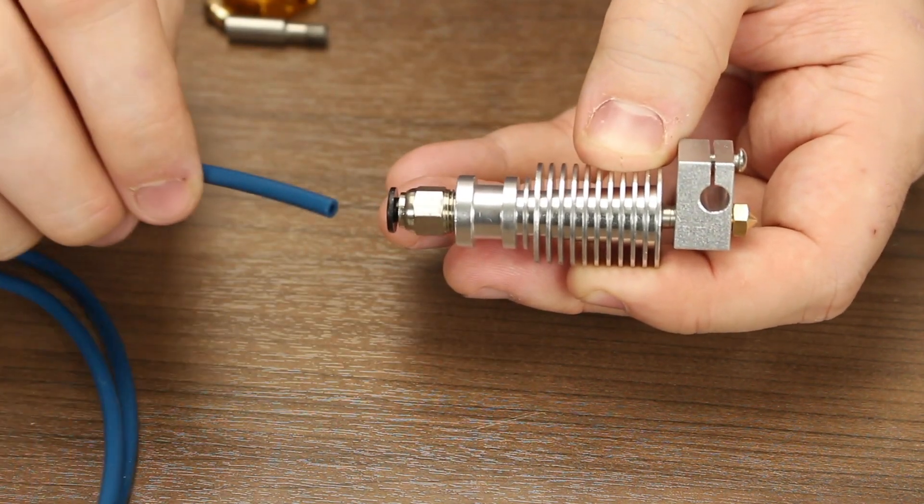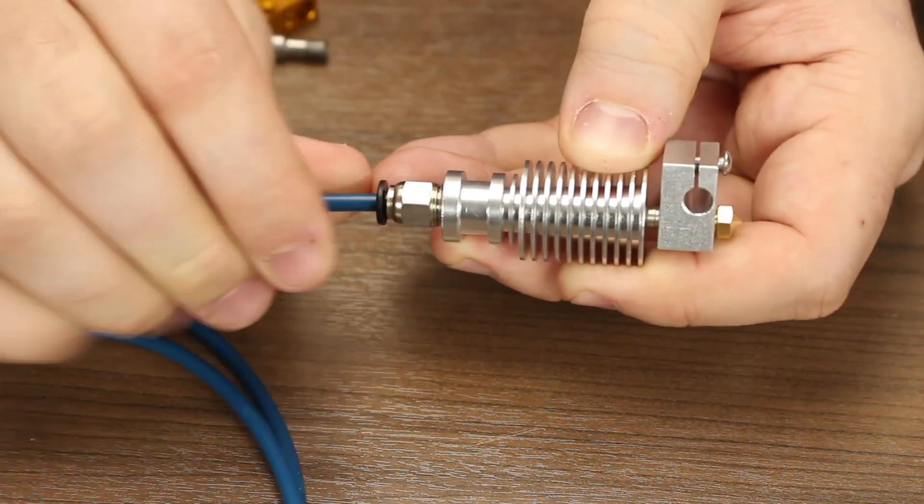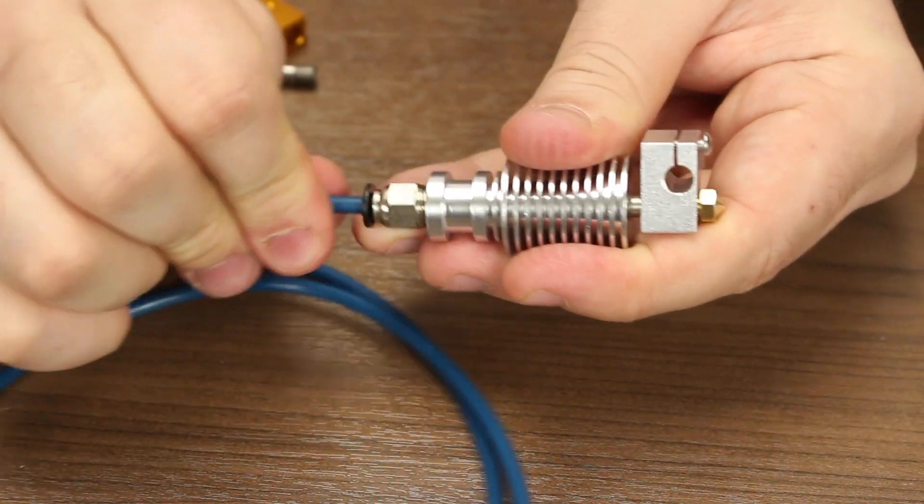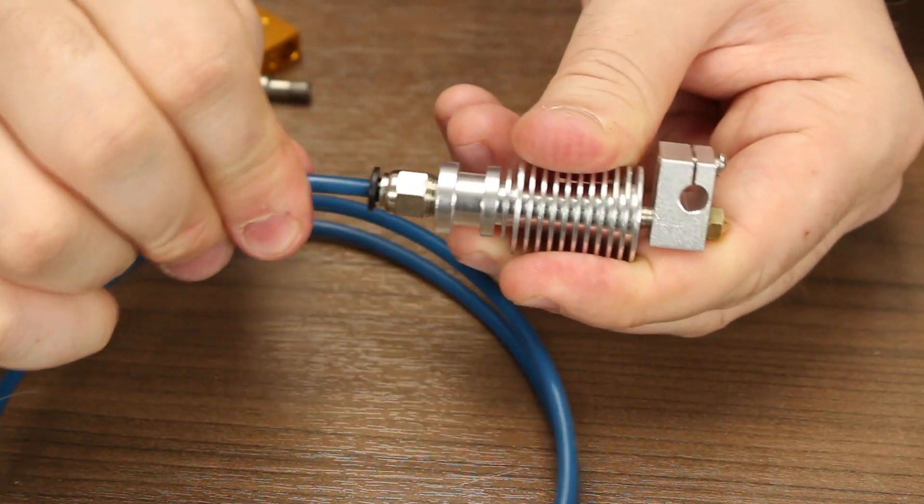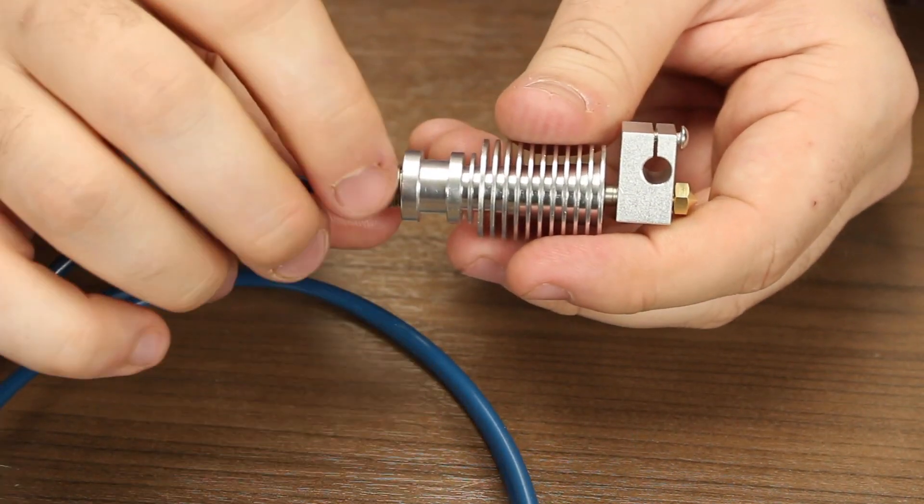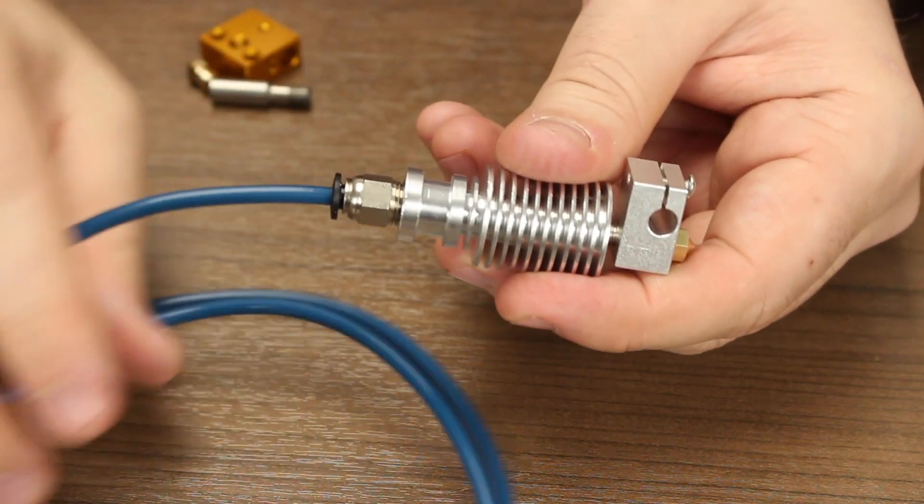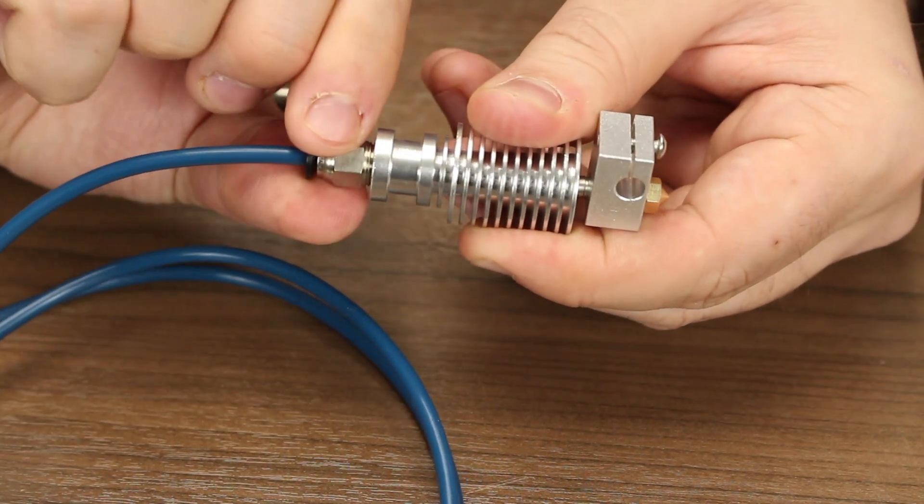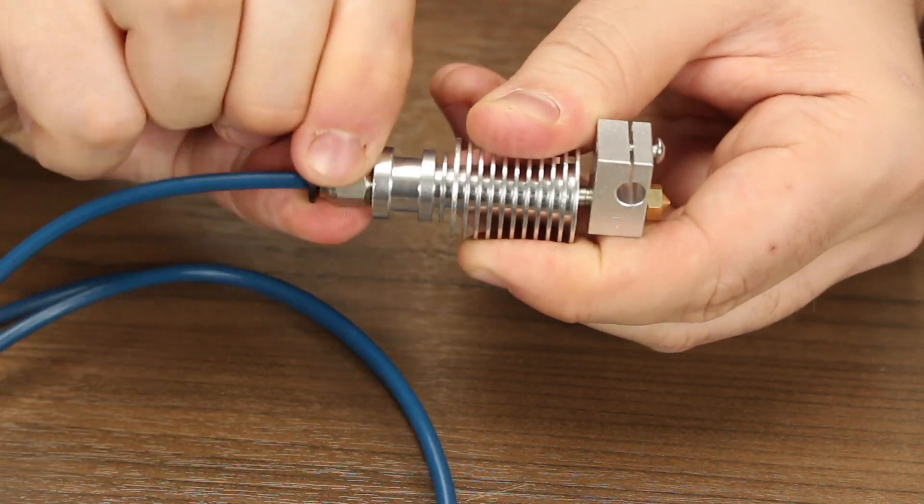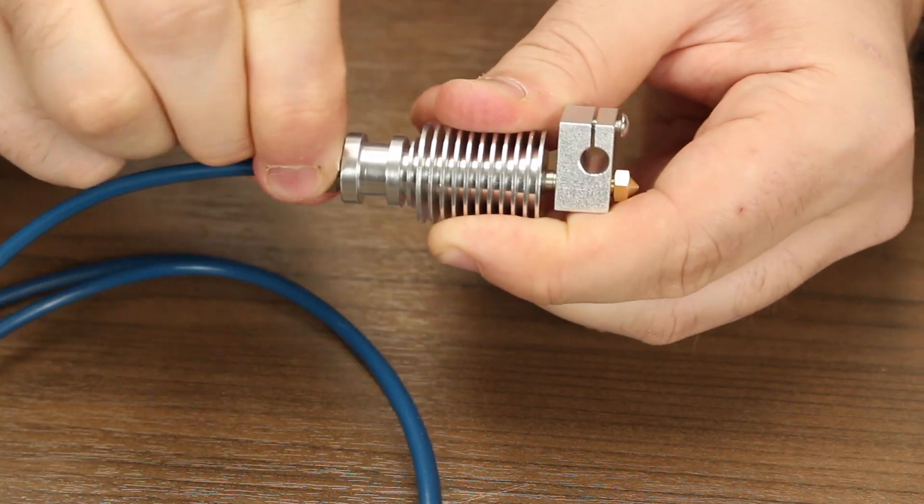Now we can take our PTFE and insert it. The nature of the pneumatic fitting is that it will let the PTFE go in one way, but won't let it go out the other way. Press down until you're sure the PTFE is touching the top of that nozzle. Once that requirement is satisfied, now you can take your fingers or a wrench and wrench down the pneumatic fitting. You should feel a bit of resistance. That's the pneumatic fitting biting into the PTFE tube and making a good seal.